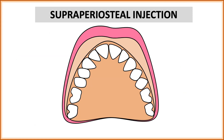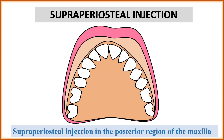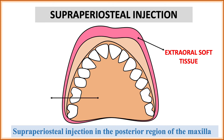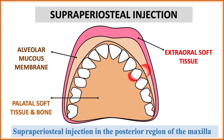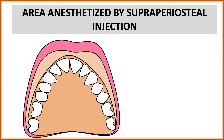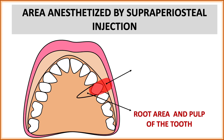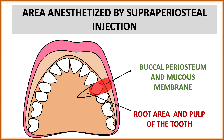If we give the supraperiosteal injection in the posterior region of the maxilla — for example in the premolar area — landmarks include the extraoral soft tissue, palatal soft tissue and bone, and the alveolar mucous membrane. The area anesthetized by local infiltration near the first premolar includes the root area, pulp of the tooth, buccal periosteum, and mucous membrane — limited to one or two teeth.